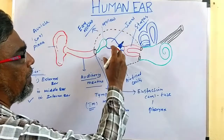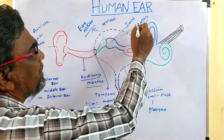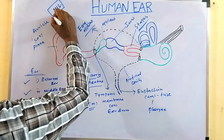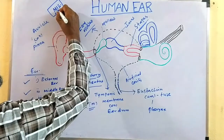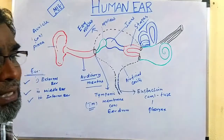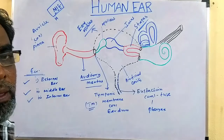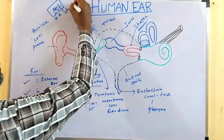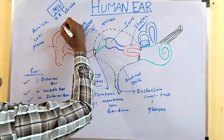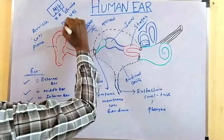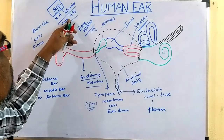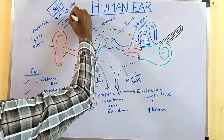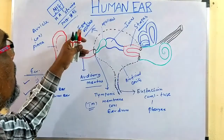In the middle ear, there is a tympanic cavity — an air-filled cavity — with three small bones: malleus, incus, stapes, collectively called ear ossicles. An easy code to remember is 'MIS' — M for malleus, I for incus, S for stapes. Malleus has a hammer shape, incus has an anvil shape, and stapes has a stirrup bone shape.